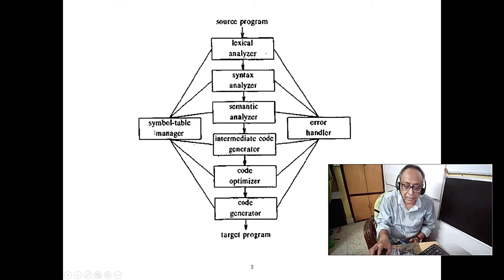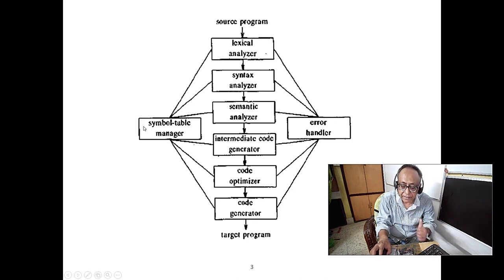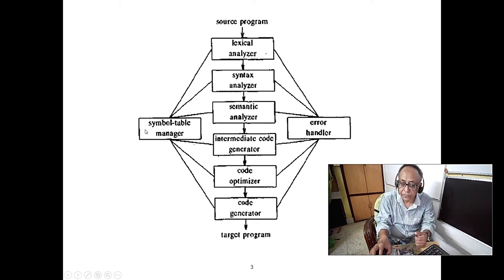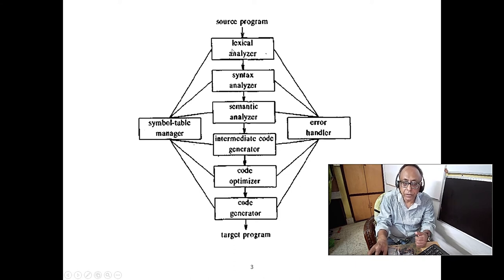It is a kind of dictionary. If you know Python dictionaries, it is the best example — it is a kind of lookup table. It has to be pretty fast because the symbol table is used in all subsequent stages.